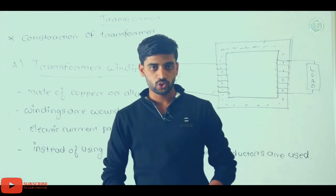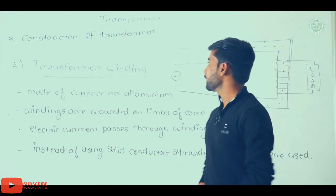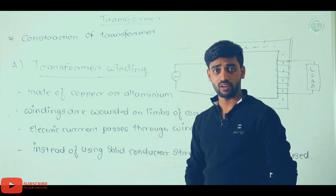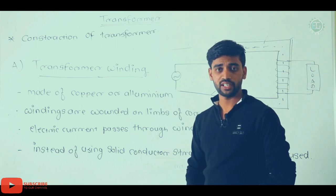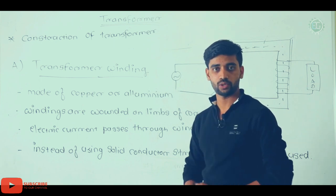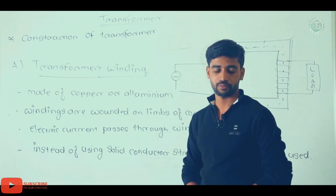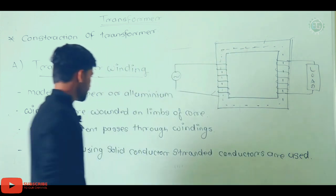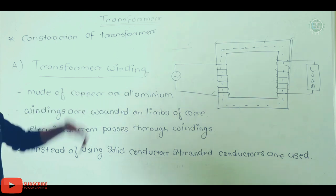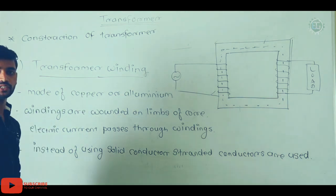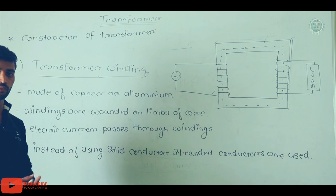Now we will see transformer windings. The winding is the second most important part in the construction of a transformer after the transformer core. Transformer windings are made up of copper or aluminum conductors.